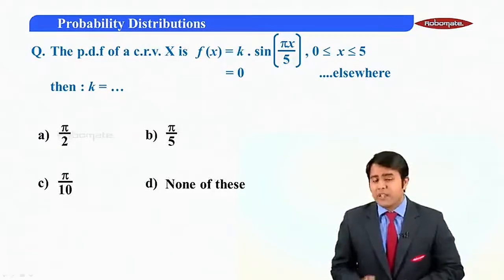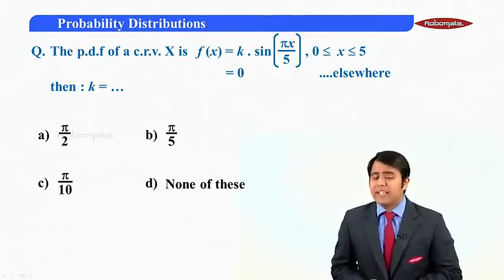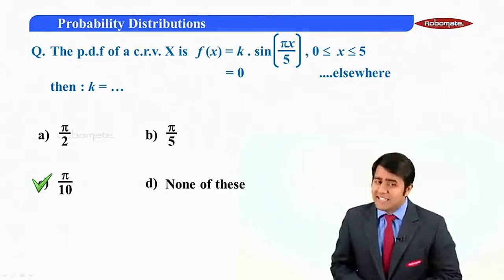So this was our question. The value for k which we obtained was pi by 10. Therefore, option C is the correct answer.